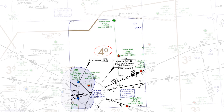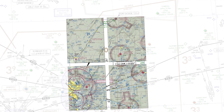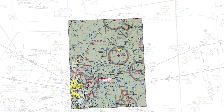On a sectional chart, we also break the area into quadrants, but they're smaller than the ones on the IFR chart. Here, four sectional quadrants make up the area of the IFR quadrant. Each one has its own MEF — they're all different, and the highest one is 3,000 feet.